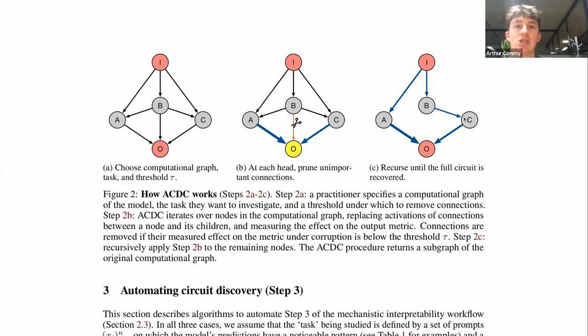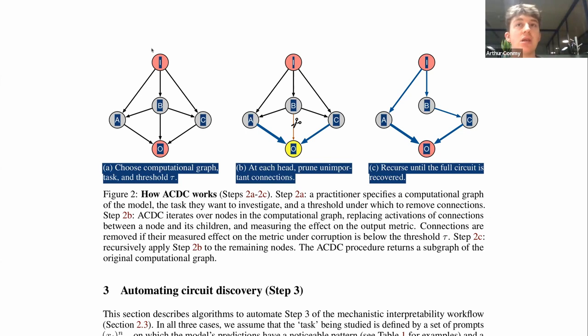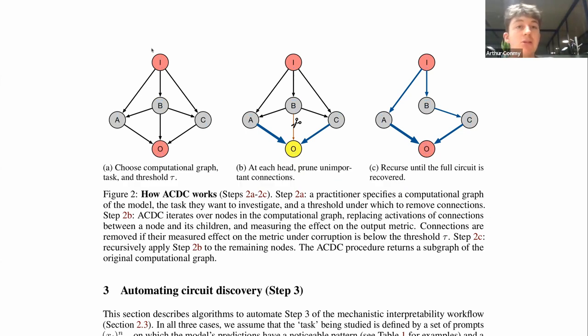So that was the design choice to choose a pretty computationally expensive method. Because one, it was substantially more simple to provide as a baseline. And secondly, it didn't have worrying complications about plausibly dropping nodes that were actually important.